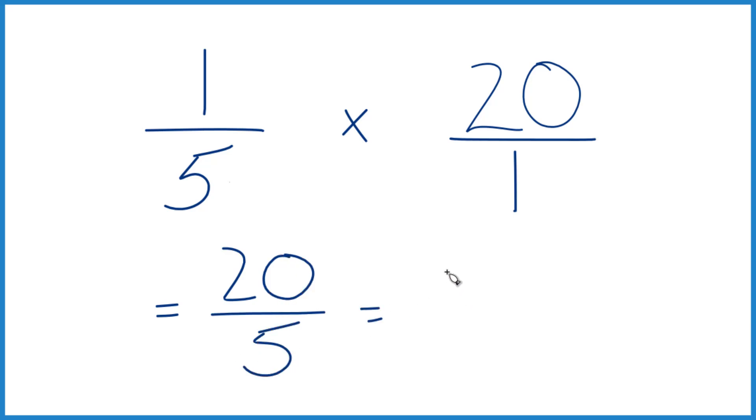5 goes into 20, 4 times. 4 times 5 is 20. So one-fifth of the number 20 is 4.